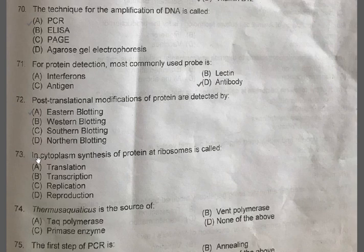Question 73: In cytoplasm, synthesis of protein at ribosomes is called — A: Translation, B: Transcription, C: Replication, D: Reproduction. The correct one is A, Translation.